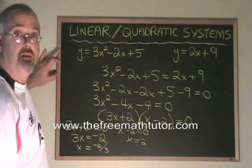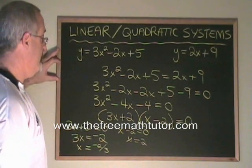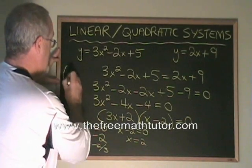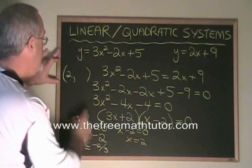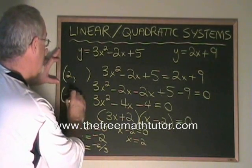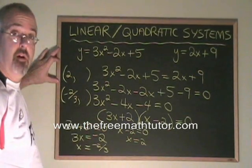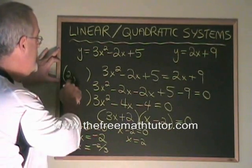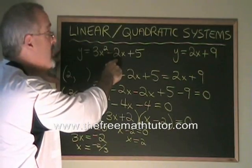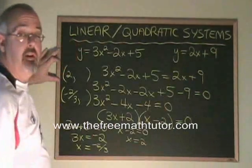We have the x coordinates of both of the points of intersection. x equals 2 is one of them, and x equals negative 2 thirds is the other. All I have to do to find the points of intersection is plug these x coordinates into either equation, the one from the quadratic or the one from the straight line.